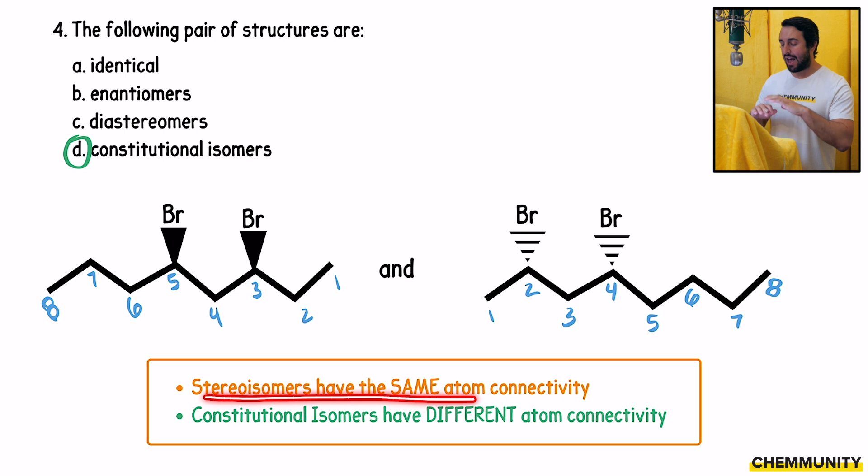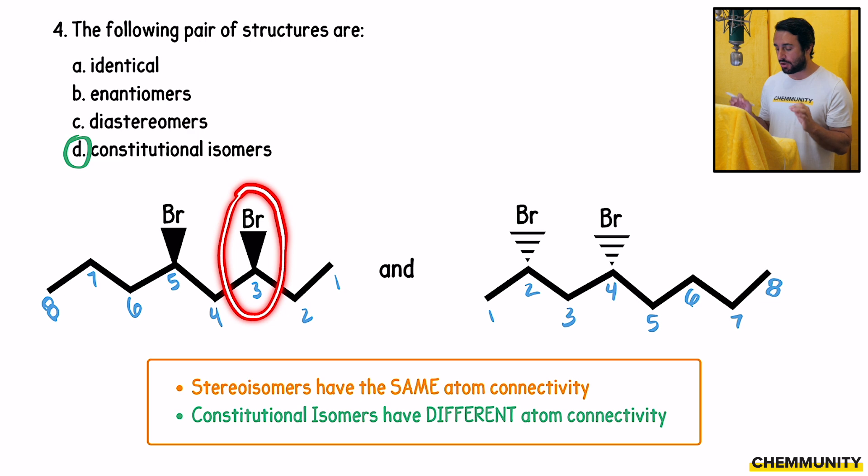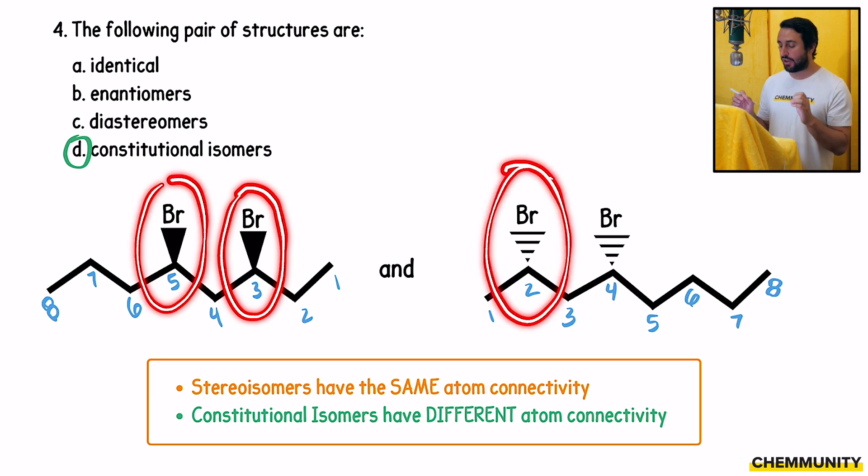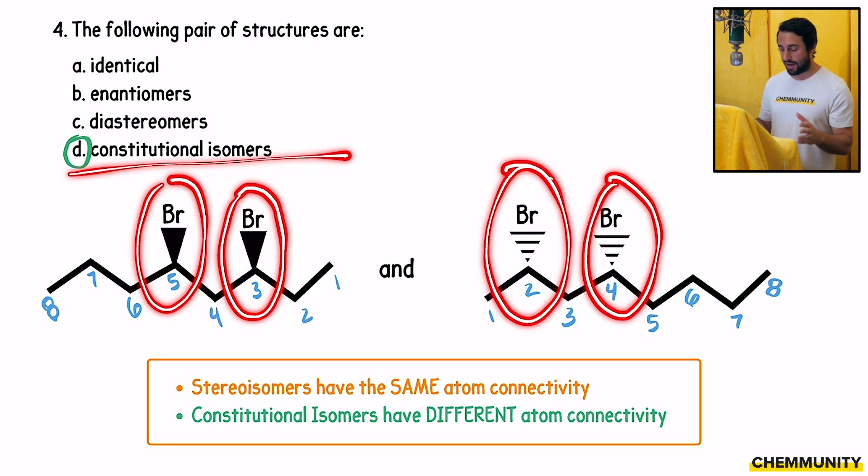Remember that stereoisomers have all the same connectivity. They just differ in the way that the groups are oriented in three-dimensional space. So if we had the bromo groups on the same carbons, but dashes became wedges and wedges became dashes, those would be stereoisomers. But here, the bromo groups are on completely different carbons. So these are different constitutional isomers.